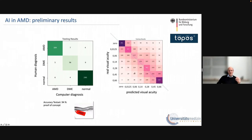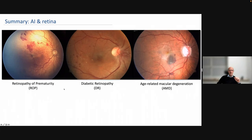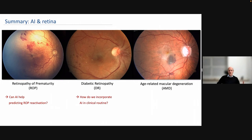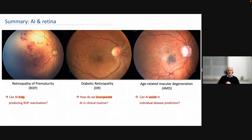But this is where I personally see a big advantage of AI algorithms as they get into clinics and help us do something we're currently only partly able to do. To summarize: in ROP, we asked can AI help predict ROP reactivation; in diabetic retinopathy, how do we incorporate AI algorithms into clinical routine; and in AMD, can AI assist in individual disease prediction. I see AI algorithms as a tool — they can help, they can assist, and they need to be incorporated into our toolbox alongside fundoscopy and OCT. AI-based algorithms can just as well be the next tool in our toolbox. Thank you.